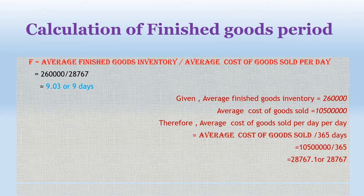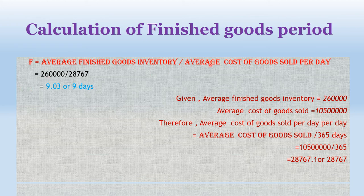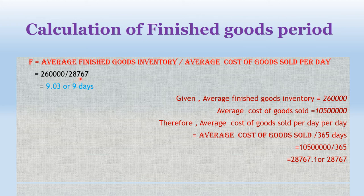Next: calculation of finished goods conversion period. Finished goods conversion period equals average finished goods inventory divided by average cost of goods sold per day. Average cost of goods sold per day equals Rs. 1,55,00,000 divided by 365 days, which gives Rs. 28,767 per day. Finished goods inventory is Rs. 2,60,000, so finished goods conversion period is approximately 9 days.